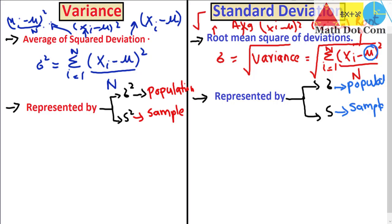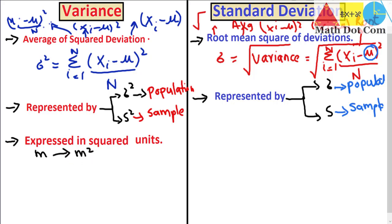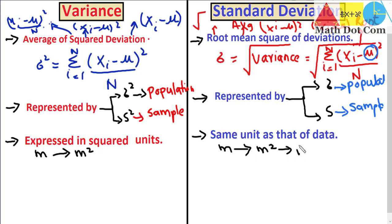The next difference is very important. Variance is expressed in squared units. Since we are taking the square of the deviations, we also square the units. For example, if we have data of heights measured in meters, the variance will be in meters squared instead of meters. Standard deviation, on the other hand, has the same unit as the data — because we take the square root. If data is in meters, squaring gives meters squared, but taking the square root brings it back to meters. So the unit of the data and the standard deviation remain the same, making results easier to interpret.